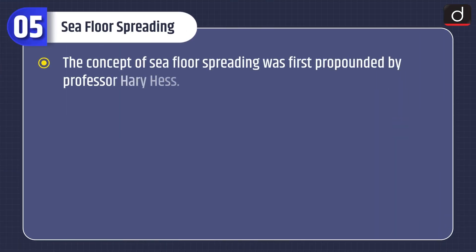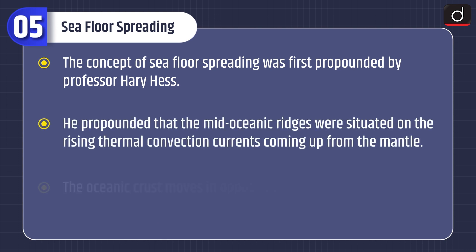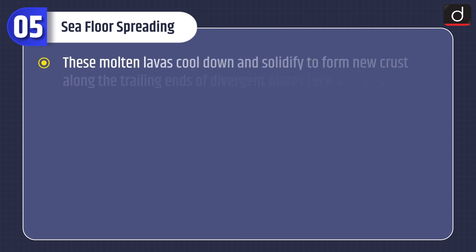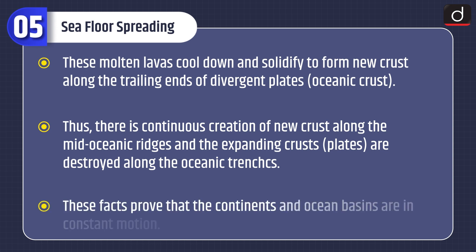The concept of seafloor spreading was first propounded by Professor Harry Hess. He propounded that the mid-oceanic ridges were situated on rising thermal convection currents coming up from the mantle. The oceanic crust moves in opposite directions from mid-oceanic ridges. The molten lavas cool down and solidify to form new crust along the trailing ends of divergent oceanic crust. Thus there is a continuous creation of new crust along the mid-oceanic ridges, and the expanding crust or plates are destroyed along the oceanic trenches.